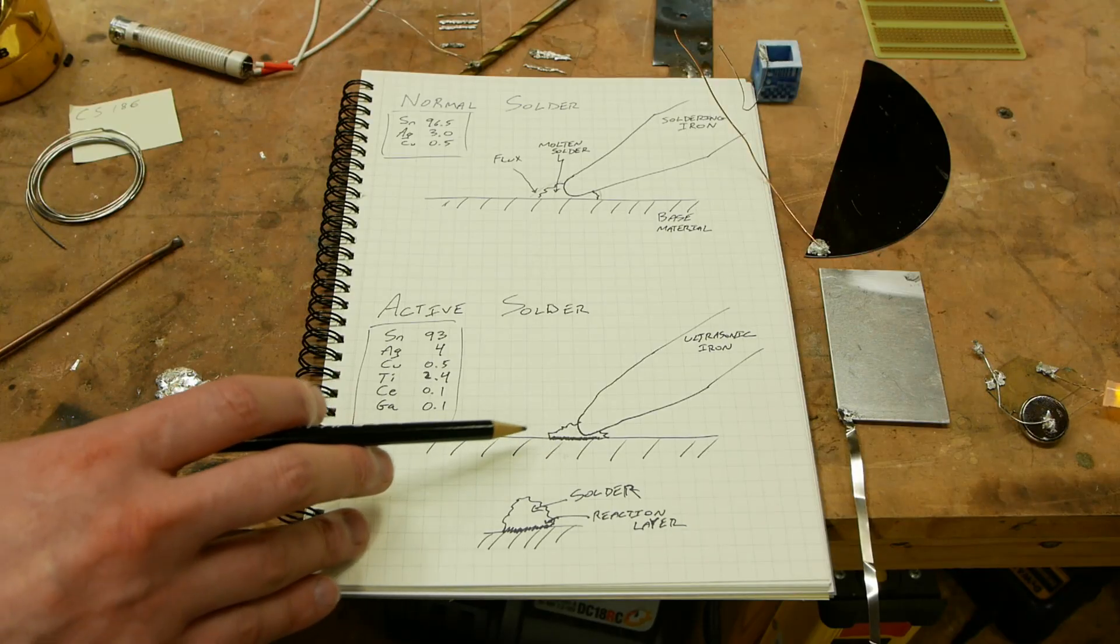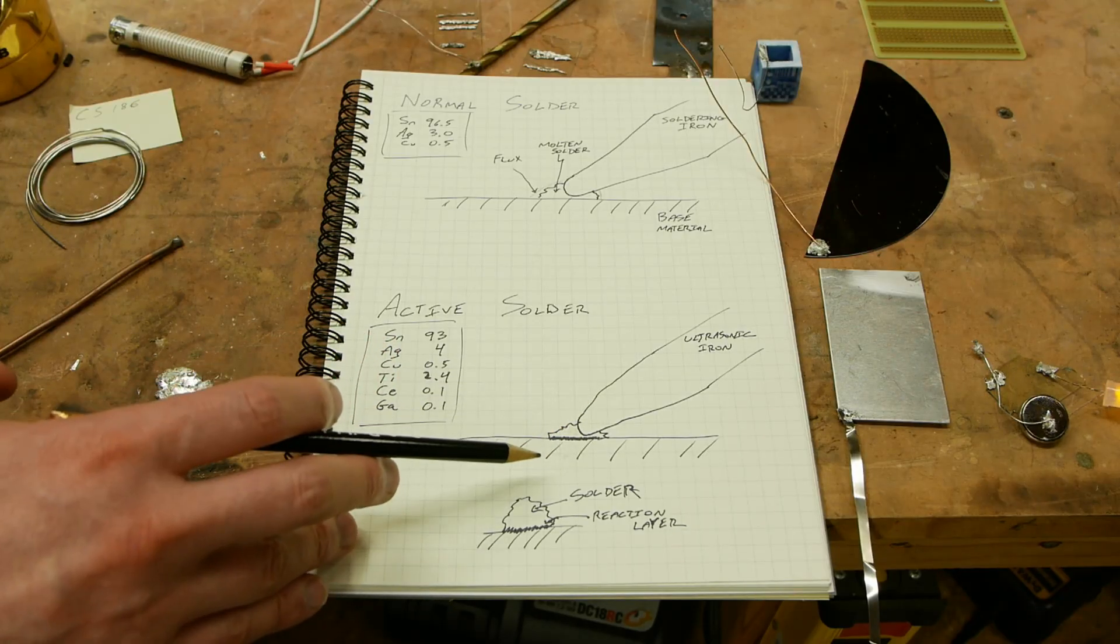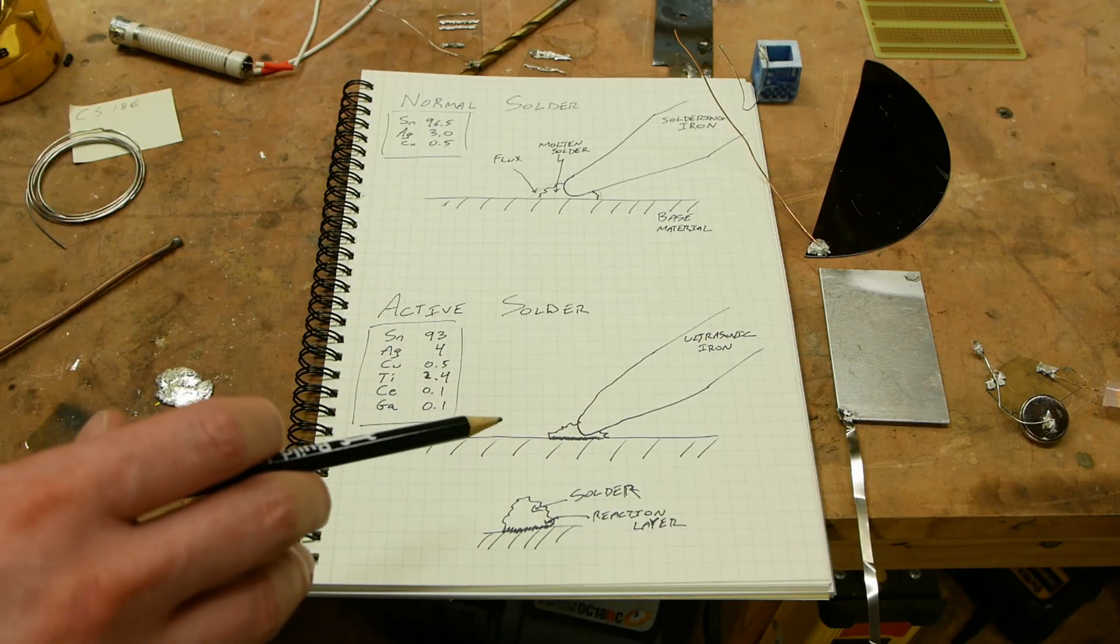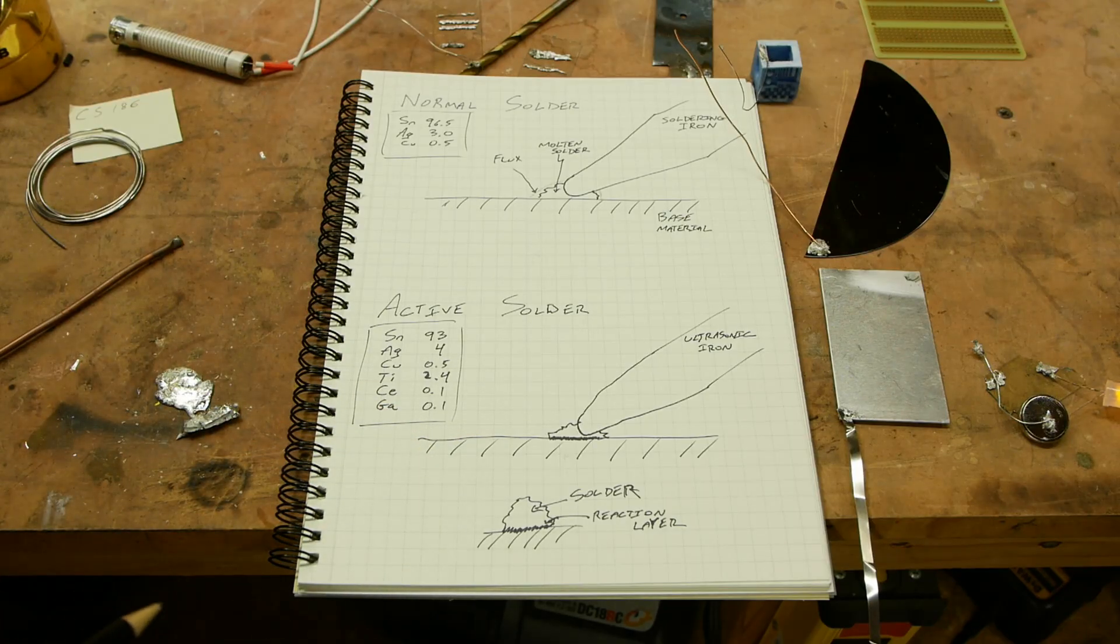Unfortunately, there's still oxygen everywhere because this is all happening in air. And what would happen at low temperatures is the titanium would just oxidize. So it would rip the solder blob open, the titanium would oxidize just with atmospheric oxygen.